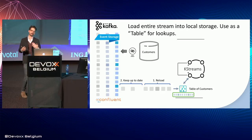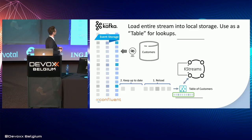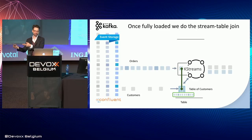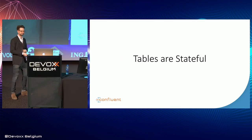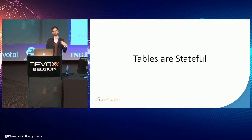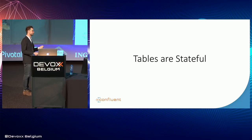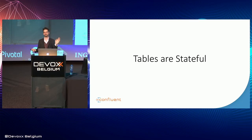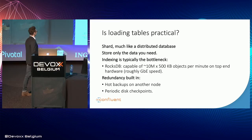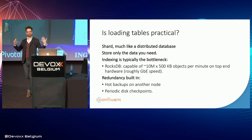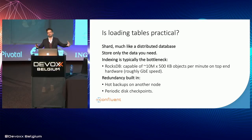We load that data set into the same data structure used for buffering. There's a table of customers held locally. Conceptually there are two phases: the first time the stream processor ever starts, it loads this data into the key-value store; then after loading, it keeps that up to date. So now we take our stream of orders, join it to our customers table — internalizing all this state — and we get a set of orders joined to a set of customers. Tables are stateful, and this can be a problem. But we don't have to use any of these patterns — these are just things a stream processor lets us do.